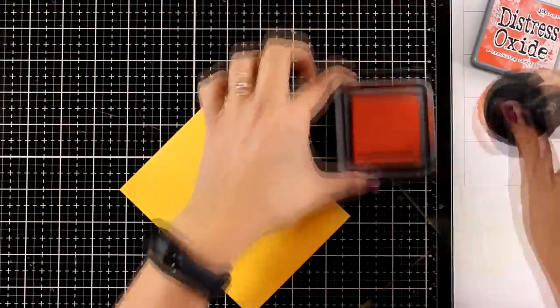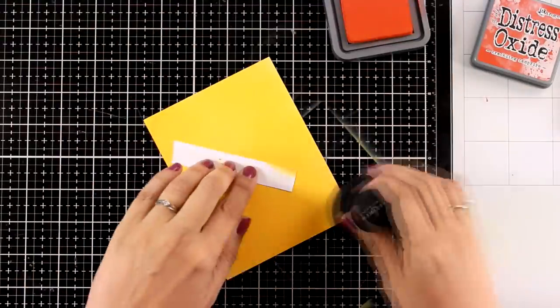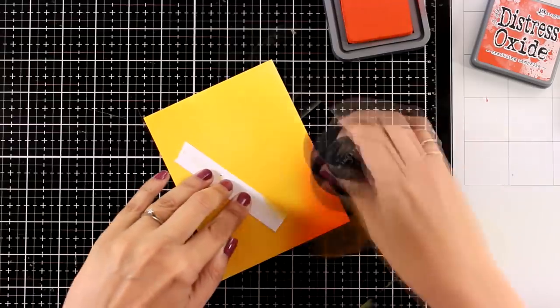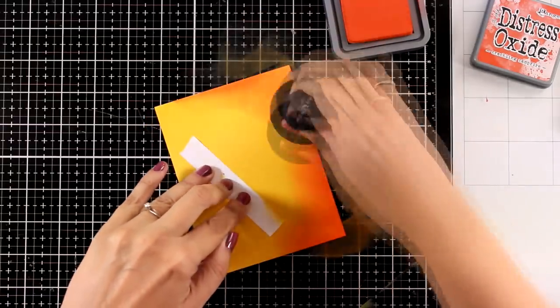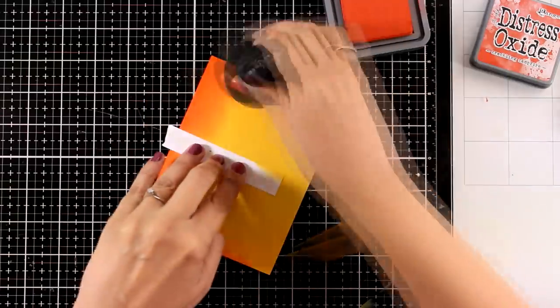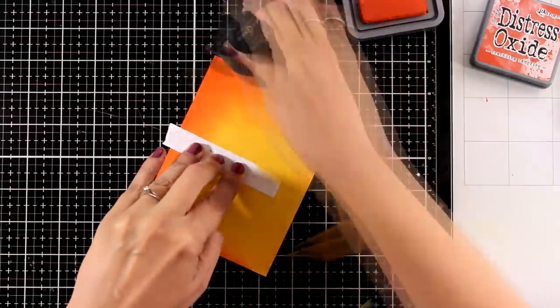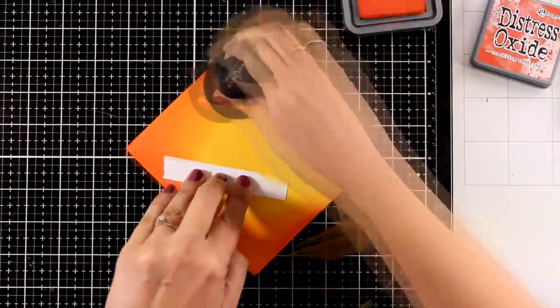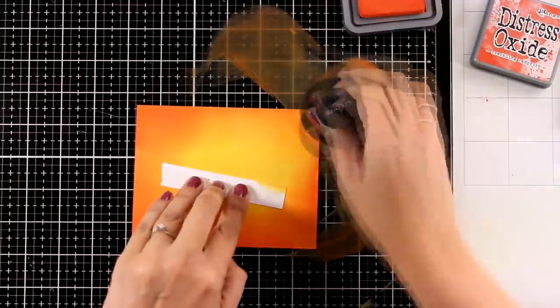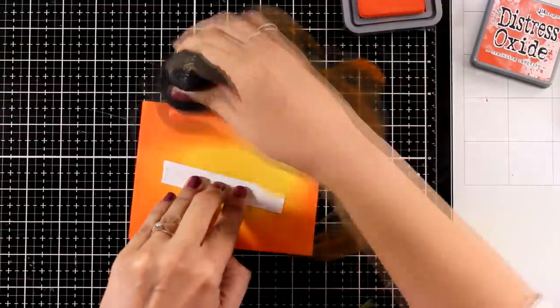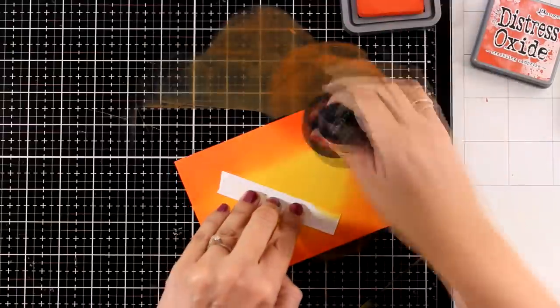Now I'm going to bring in Crackling Campfire, the new color. I'm going to bring it in from the edges towards the center without covering up the center. This blends nicely with the color that I have underneath, and I like the look because by having the center lighter it's going to look as if it is glowing.